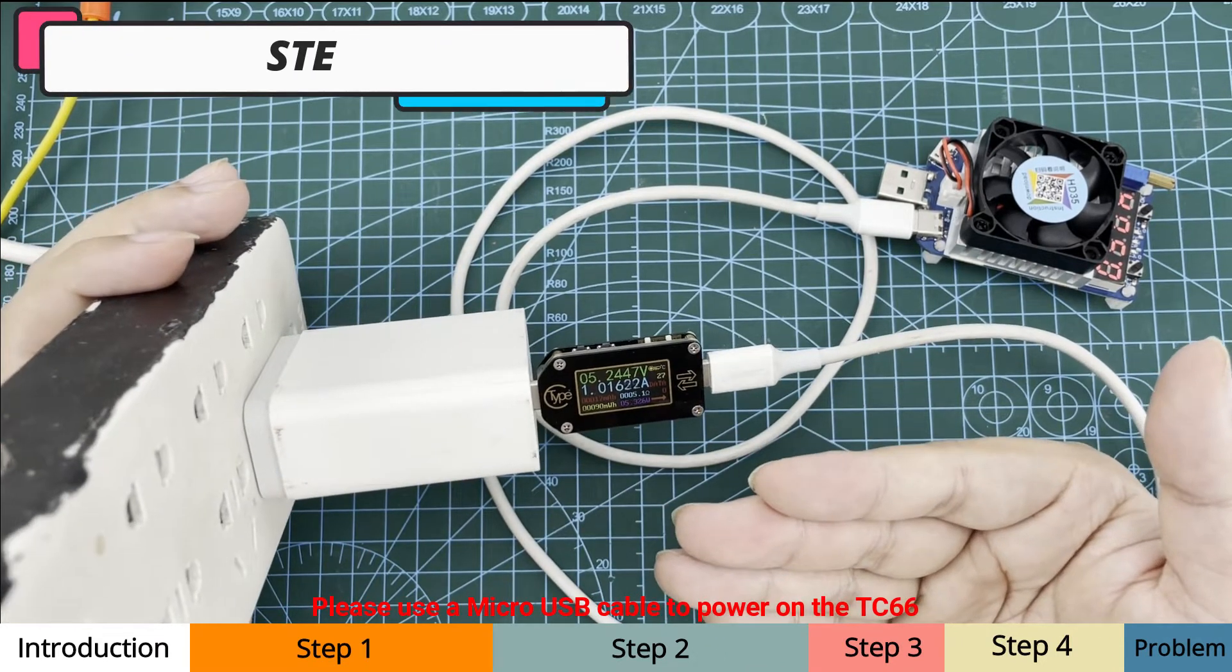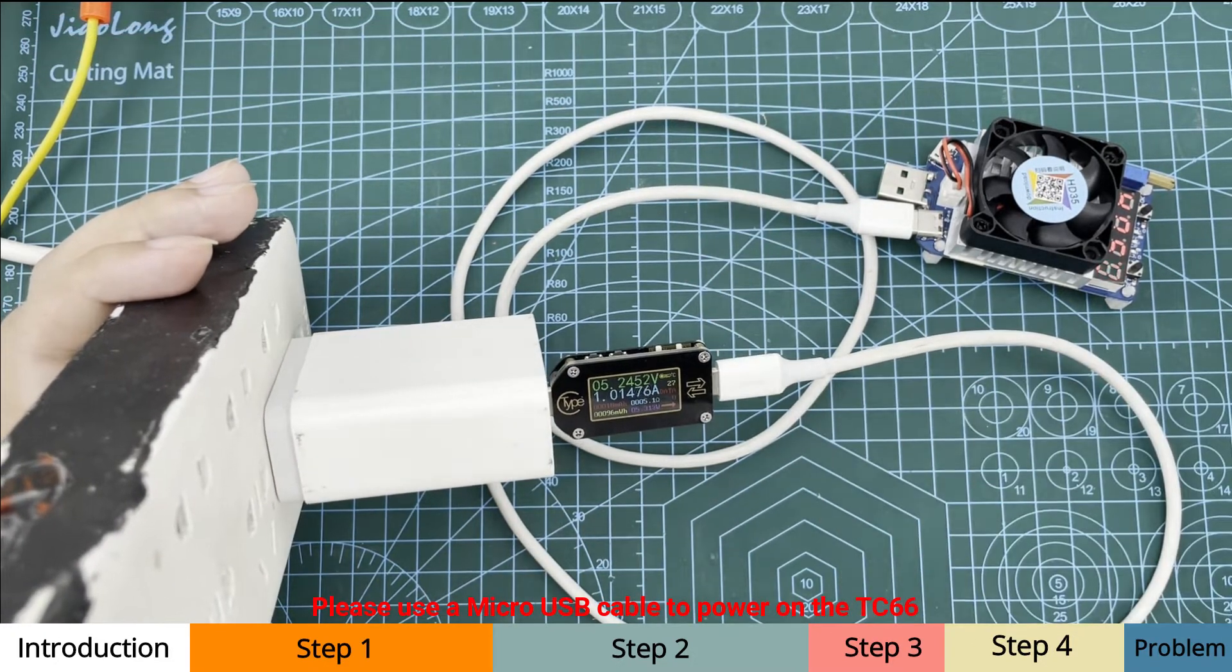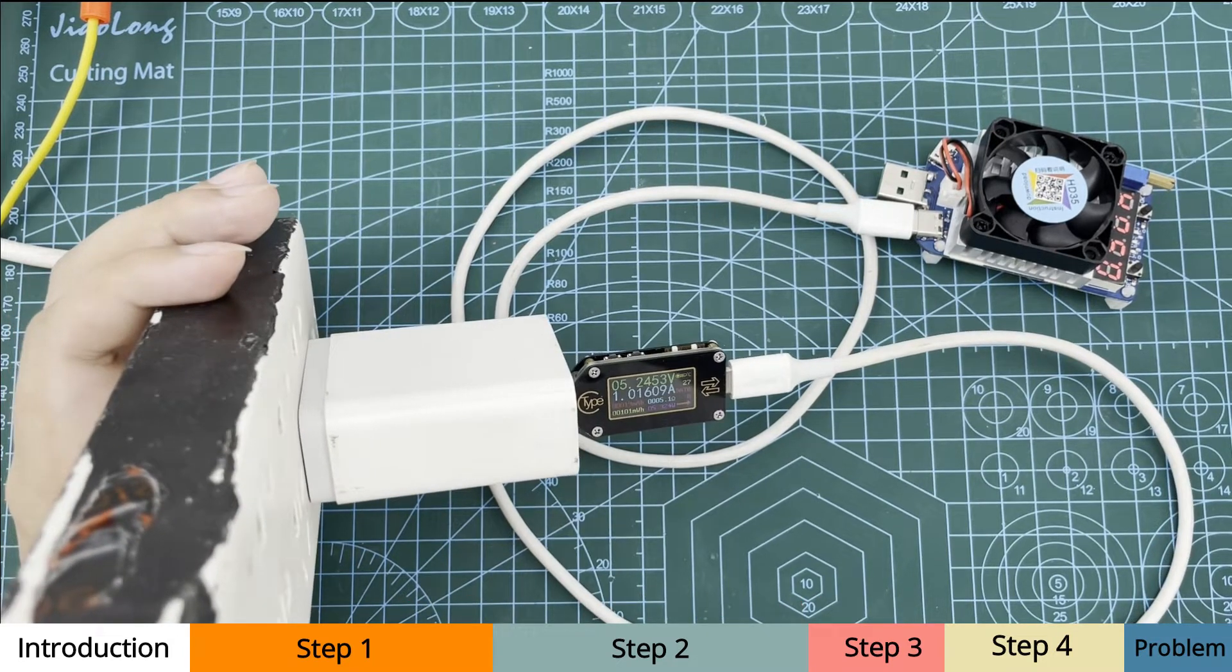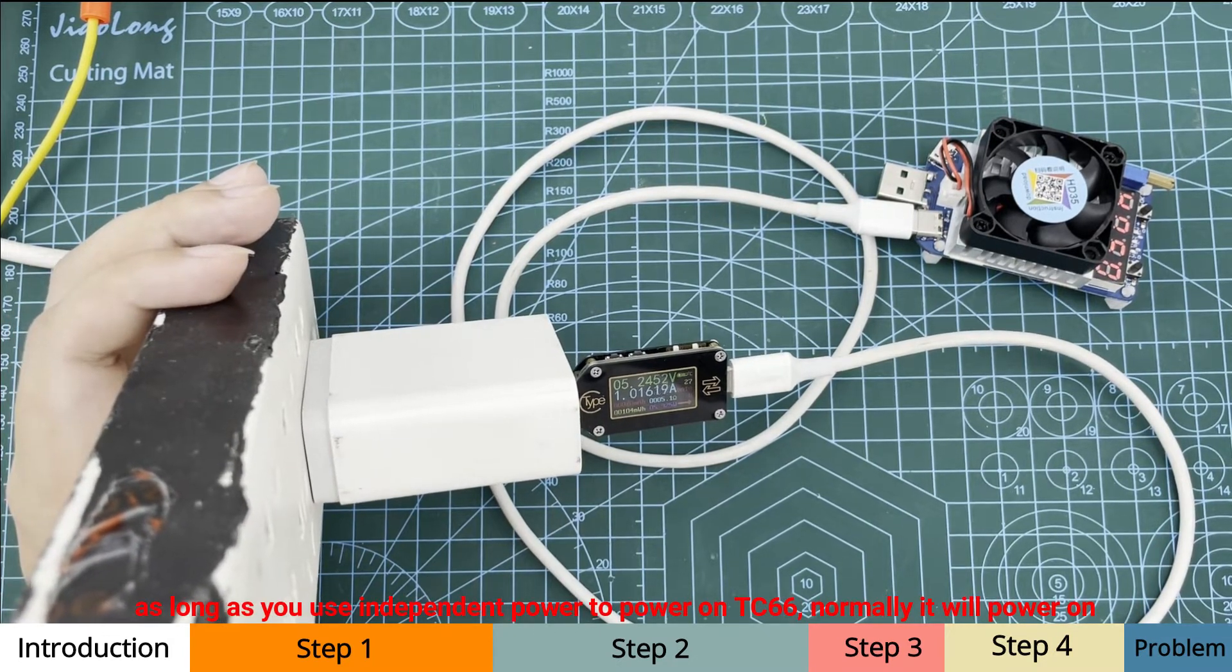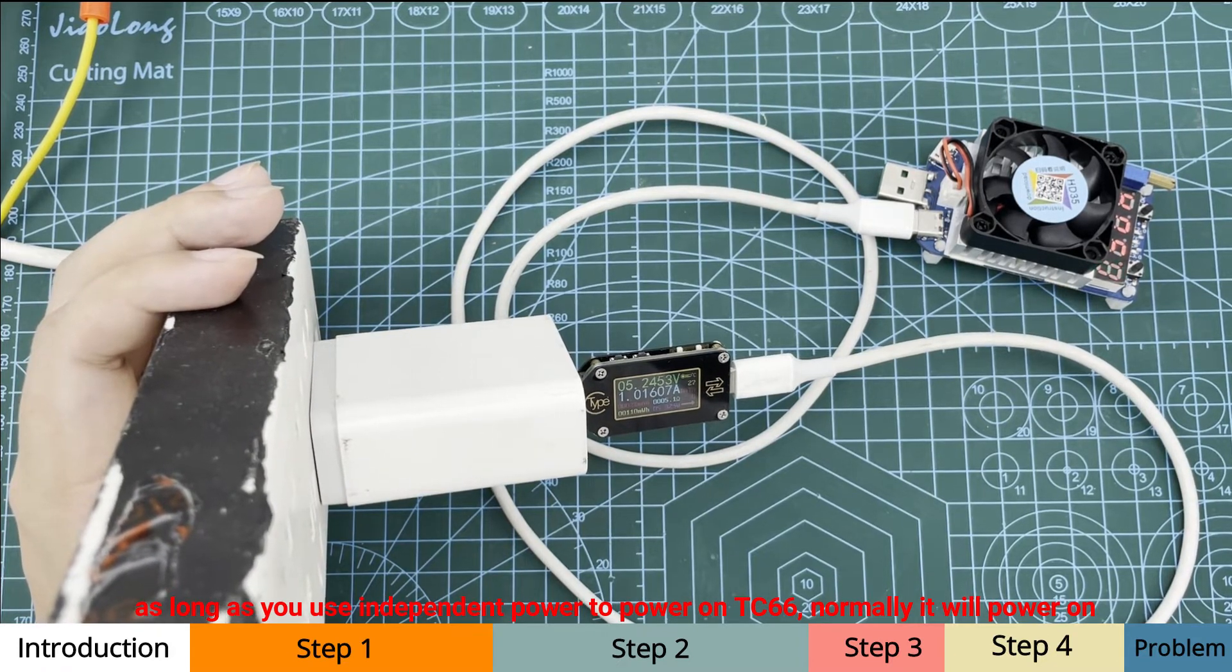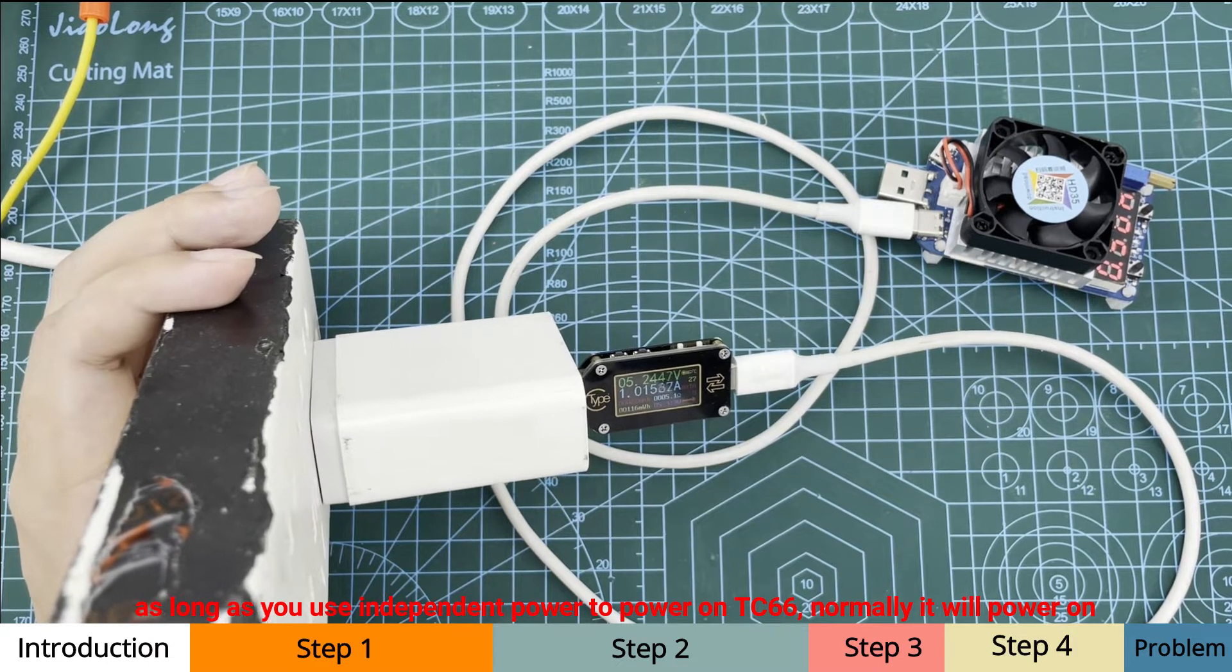Step 1, please use a micro USB cable to power on the TC66. As long as you use independent power to power on TC66, no matter there is no load or load connected, it will light.